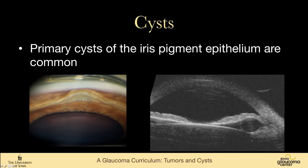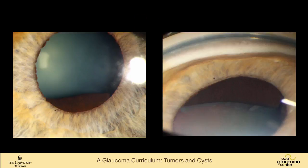These are benign and very, very common. They can only occasionally cause problems if they get so diffuse and large that they push the iris up over the trabecular meshwork. Here is an example of a very large one — you can see it poking into the pupillary space, and on gonioscopy it has really closed the angle in this region.